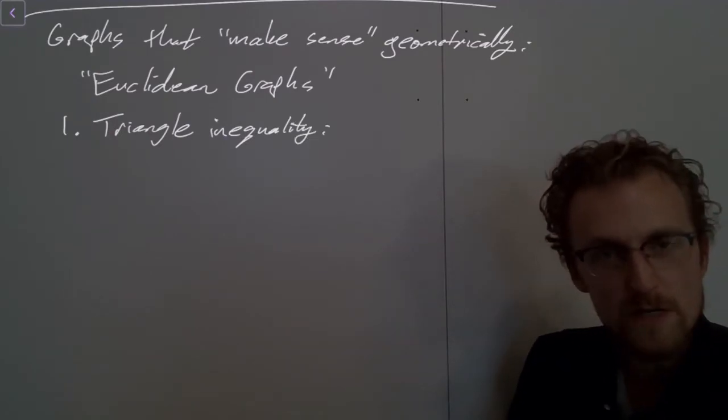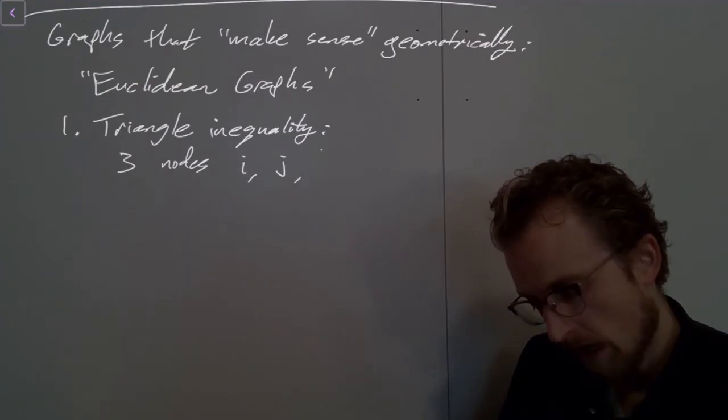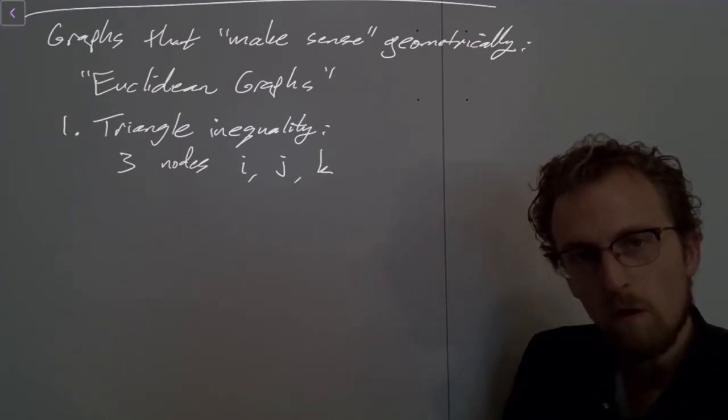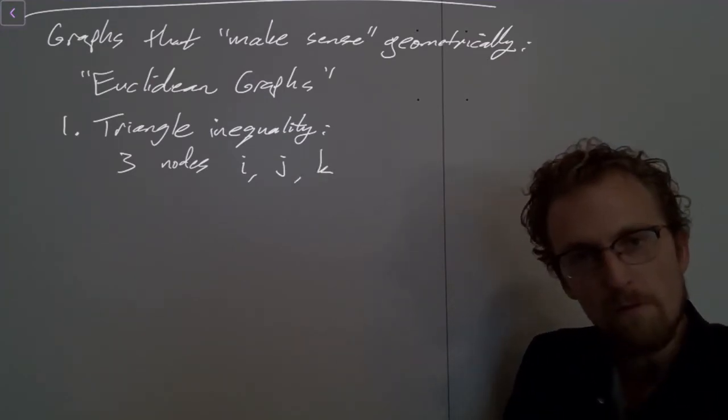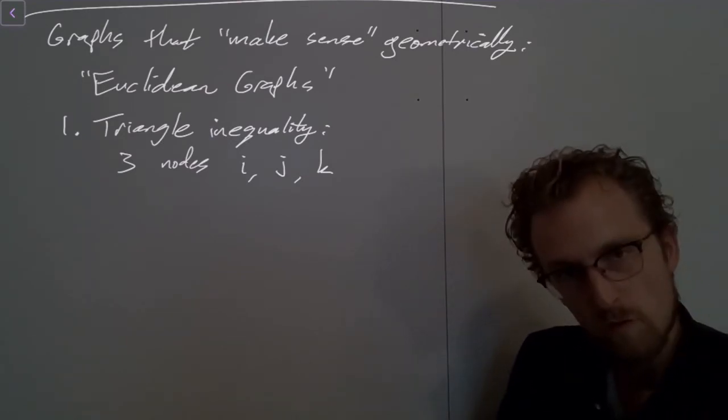Triangle inequality. So suppose I have three nodes, i, j, and k. What the triangle inequality says is that if I go from i to k directly, so if I look at the distance, where d here corresponds to the distance, so if I go directly from i to k,